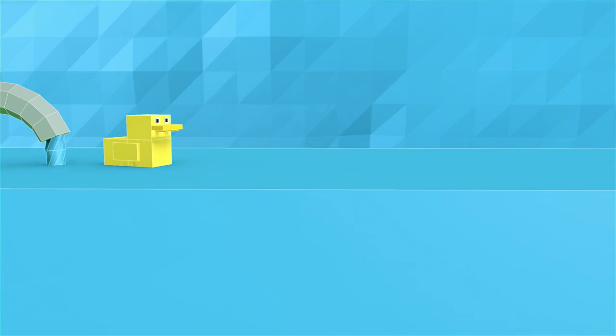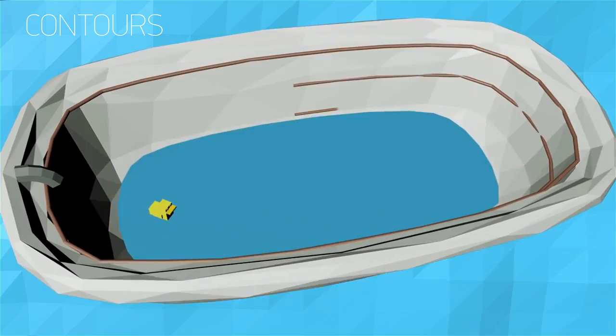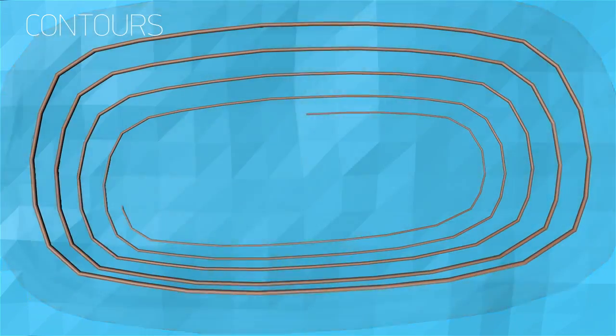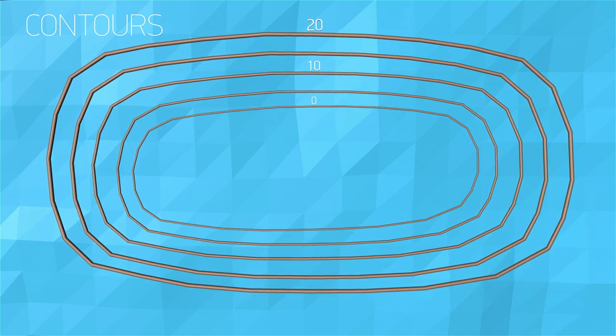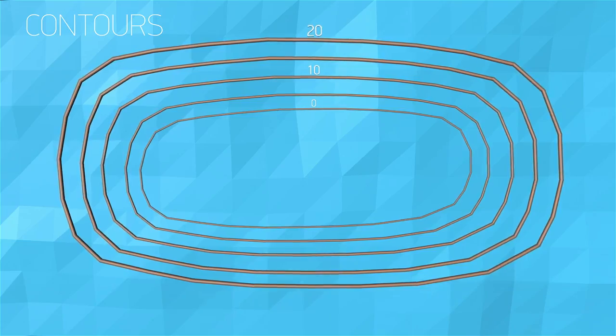Contours represent terrain with lines of the same elevation value. Contour lines are a lot like bathtub rings, except think of the terrain as the bathtub walls, and each ring is separated by an equal elevation value. When visualized together, you see the 3D shape of the terrain displayed on a 2D paper map.